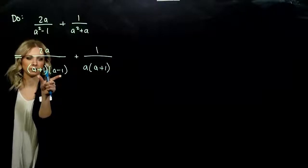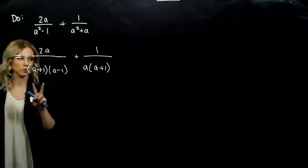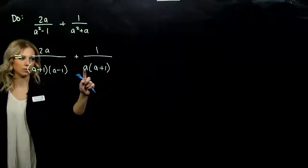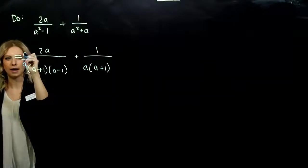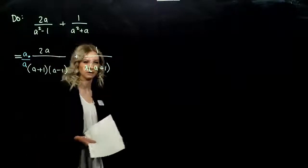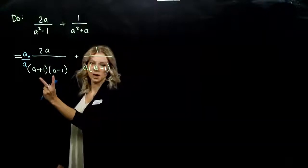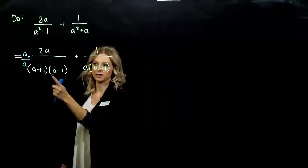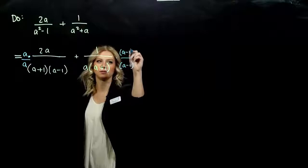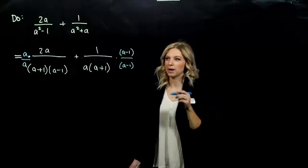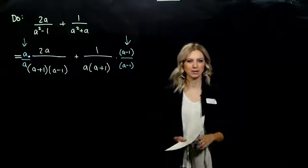What is the first denominator missing that the other one has? A factor of a minus one. And whatever we do to the bottom, we have to do to the top. Same thing on the other side — what is this one missing that the other one has? A factor of a minus one. Whatever we do to the bottom, we have to do to the top. Because in each of these cases, what are we multiplying by? One — changing what it looks like, not changing it altogether.